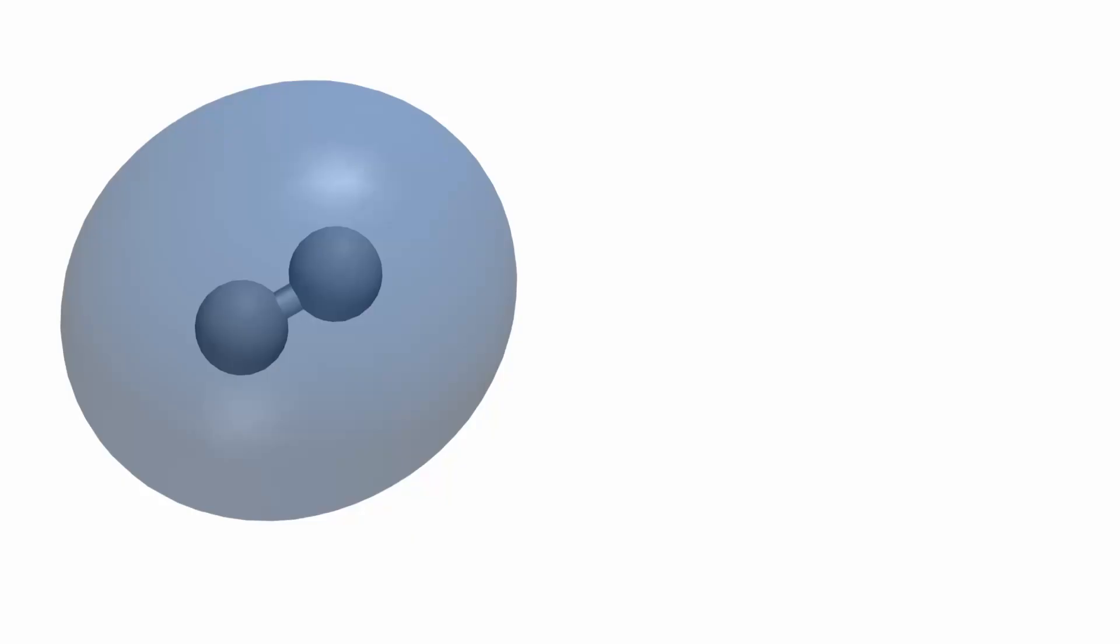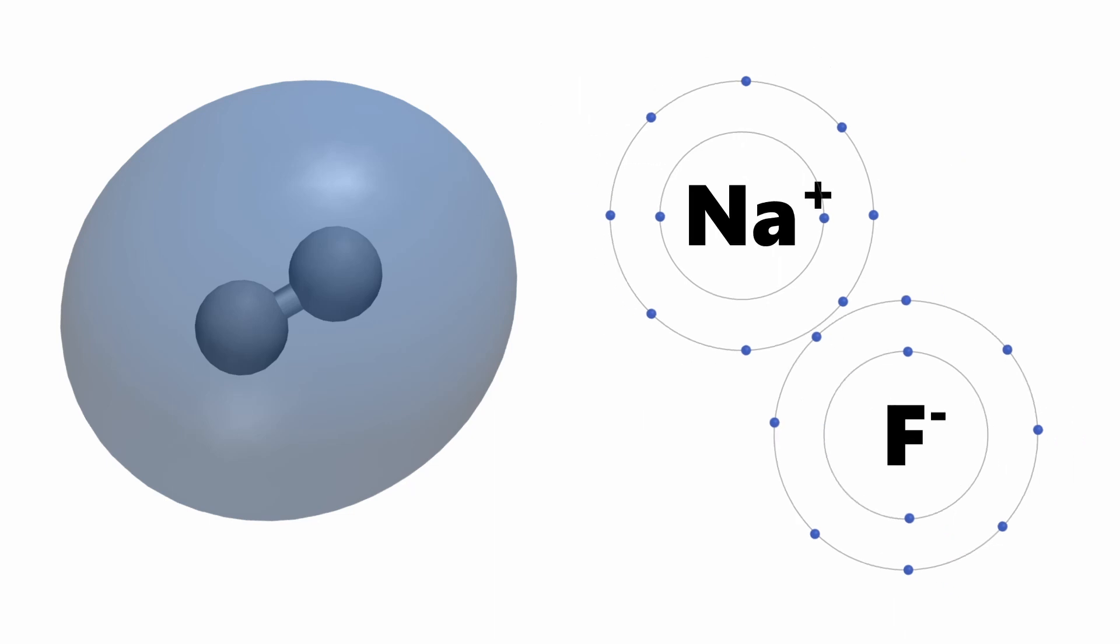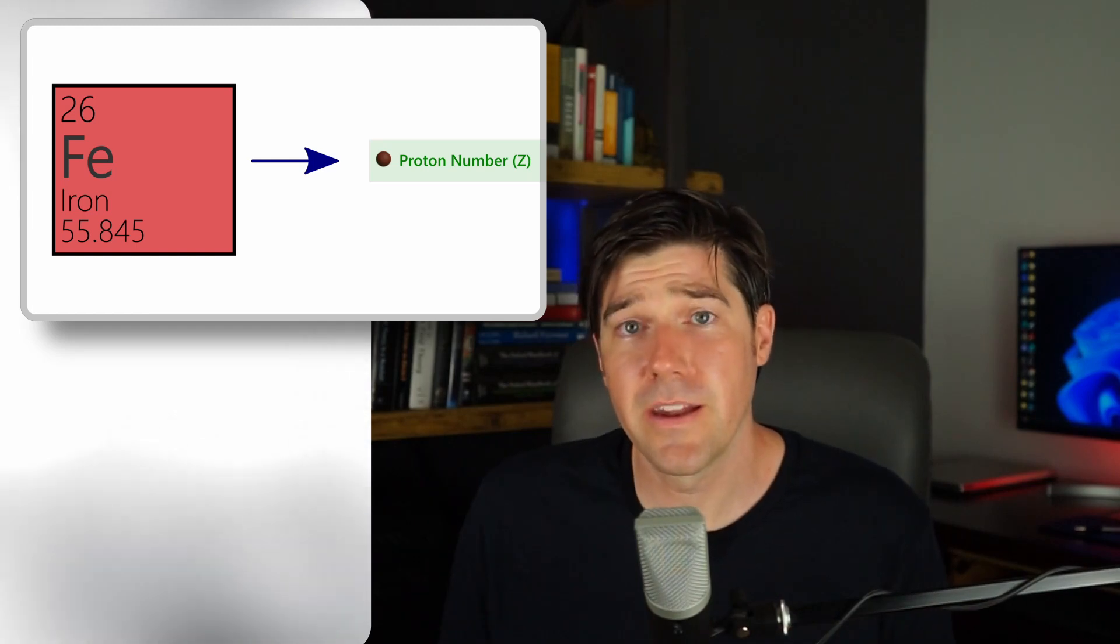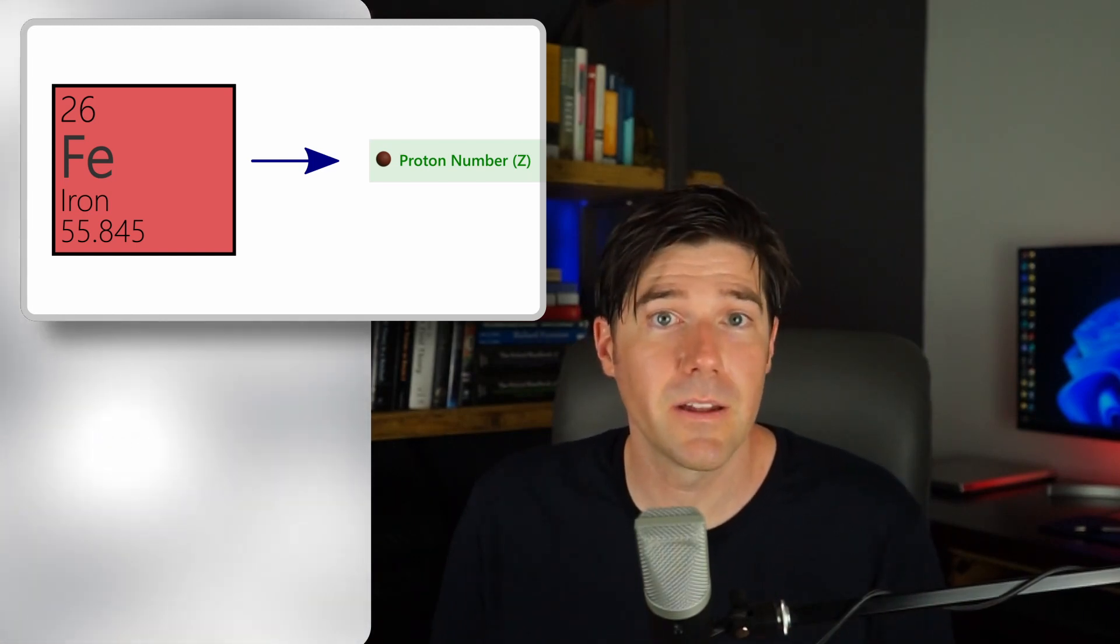However, since electrons are lighter and much more spatially extended, the number of electrons of an atom can change depending on many environmental factors, such as atomic bonding to other atoms, oxidation, reduction, etc. How about the neutrons? It turns out, the number of neutrons in an atomic nucleus can also vary, but since they are neutral in nature, they have little influence over the electronic configuration of an atom. Hence, the number of protons within an atom's nucleus is the defining trait of an element.